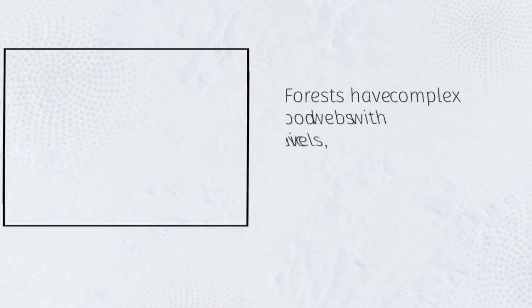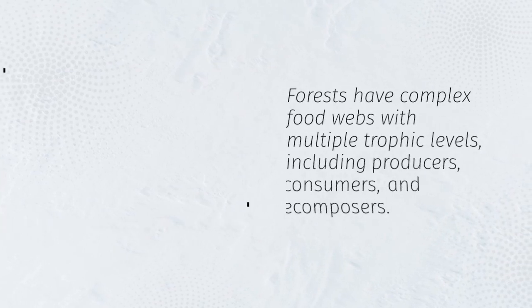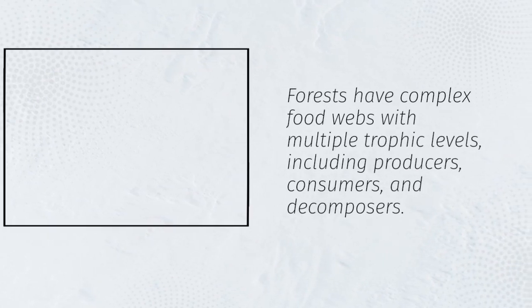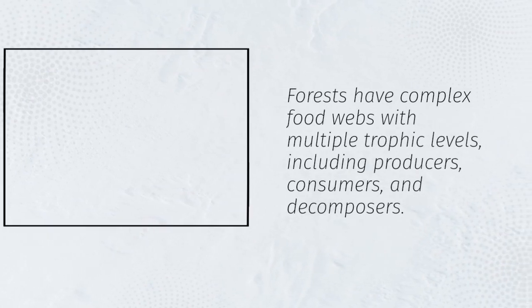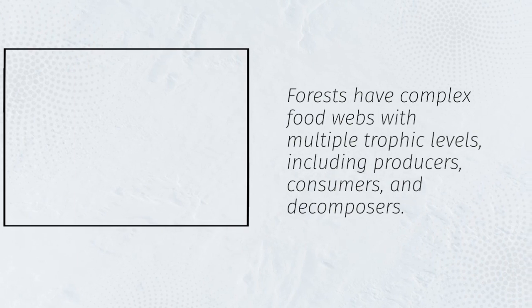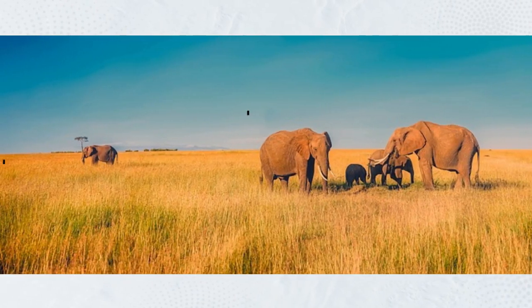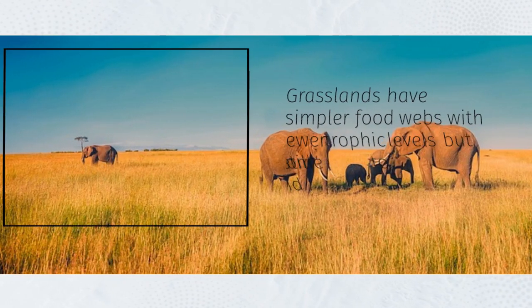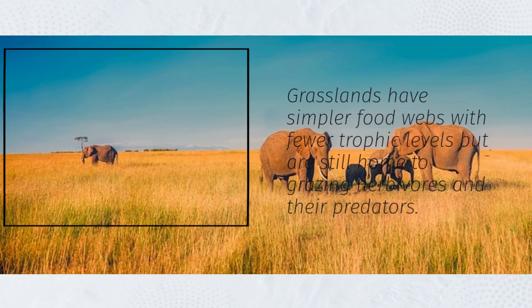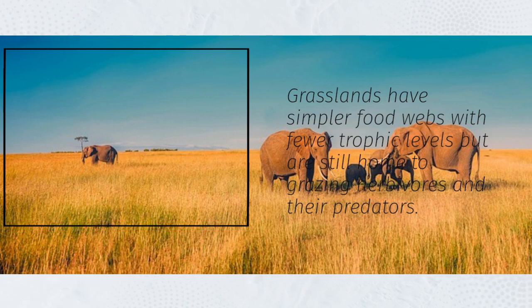Forests have complex food webs with multiple trophic levels, including producers, consumers, and decomposers. Grasslands have simpler food webs with fewer trophic levels but are still home to grazing herbivores and their predators.